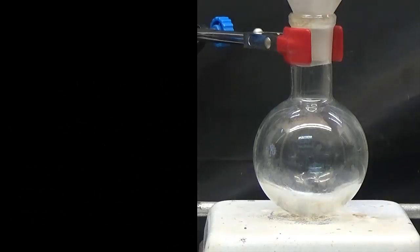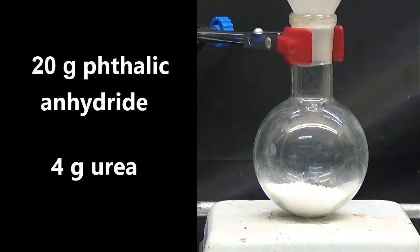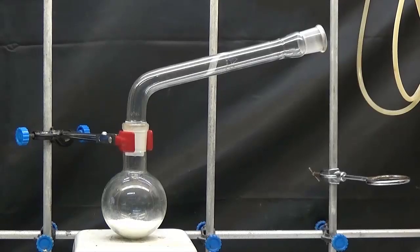To obtain phthalamide, place in a 250ml flask 20g of phthalic anhydride and 4g of urea. We attached a long tube to the flask to retain the sublimating phthalic anhydride.